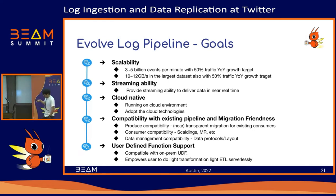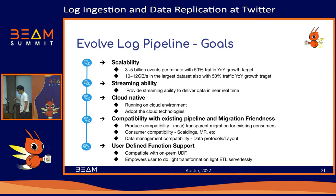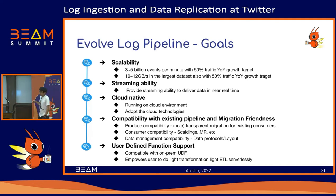Third, we want the new pipeline to be more cloud-native. By cloud-native, we mean two things: the pipeline should be able to run in a cloud environment, and we want to adopt technologies that are more cloud-native — for example, Beam and Dataflow.